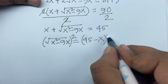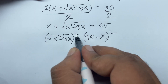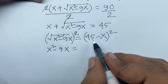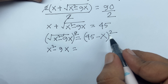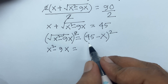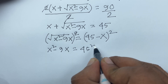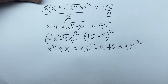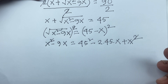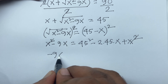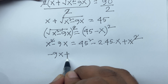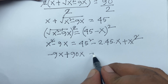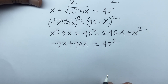After squaring, the square root cancels and we get x squared minus 9x on the left. On the right, using the a minus b whole square formula — a squared minus 2ab plus b squared — it becomes 45 squared minus 2 times 45 times x plus x squared. The x squared terms cancel on both sides. We're left with minus 9x, and moving the x term gives plus 90x, since 2 times 45 equals 90. So we have 81x equals 45 squared.